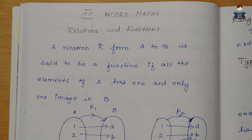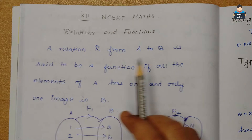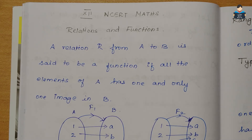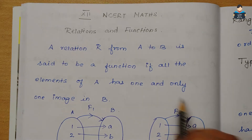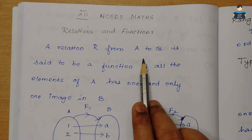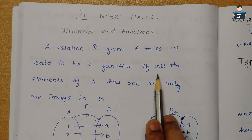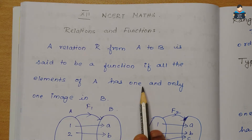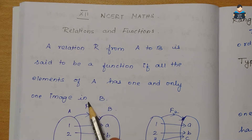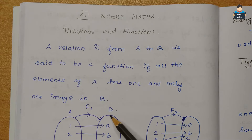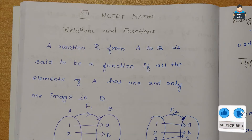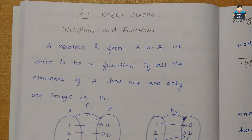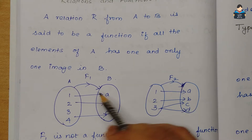In the Introduction Video, we will see types of functions. A relation R from A to B is said to be a function if all the elements of A have one and only one image in B. We will see that each element has one image in B, and we will confirm it is a function.